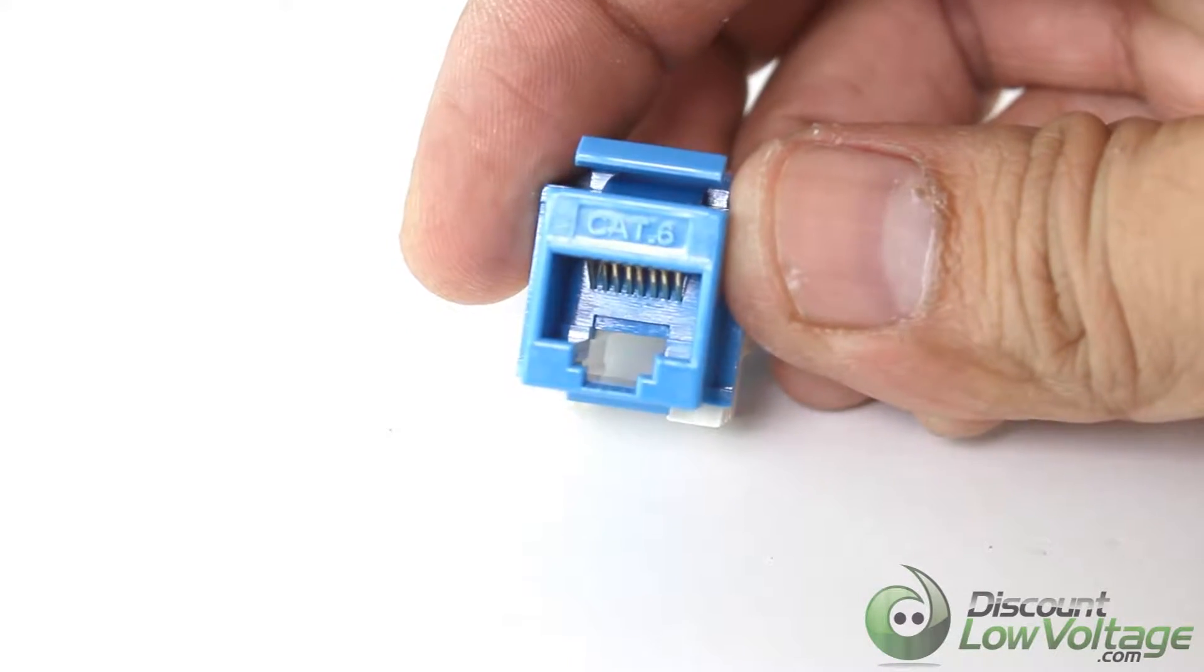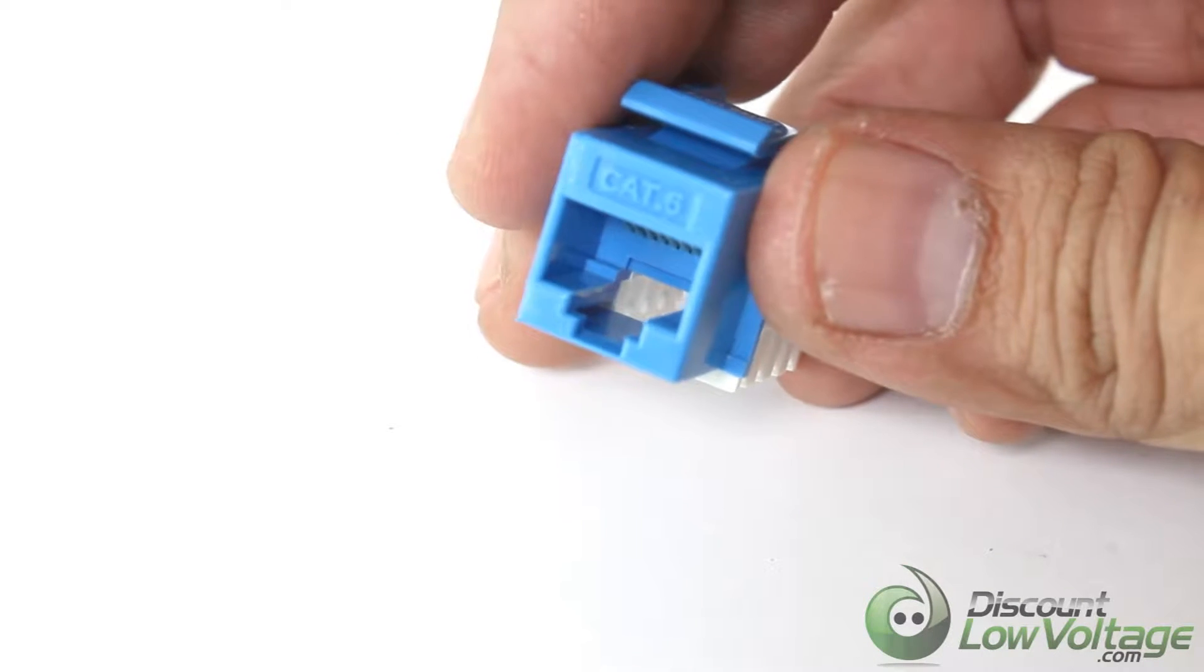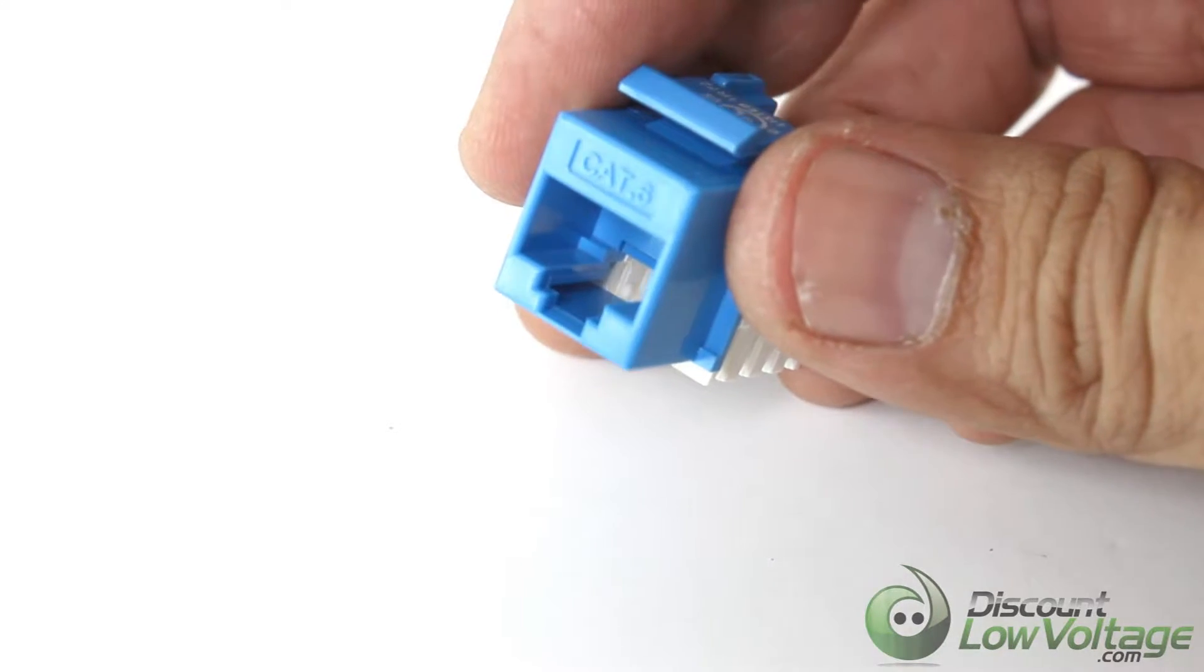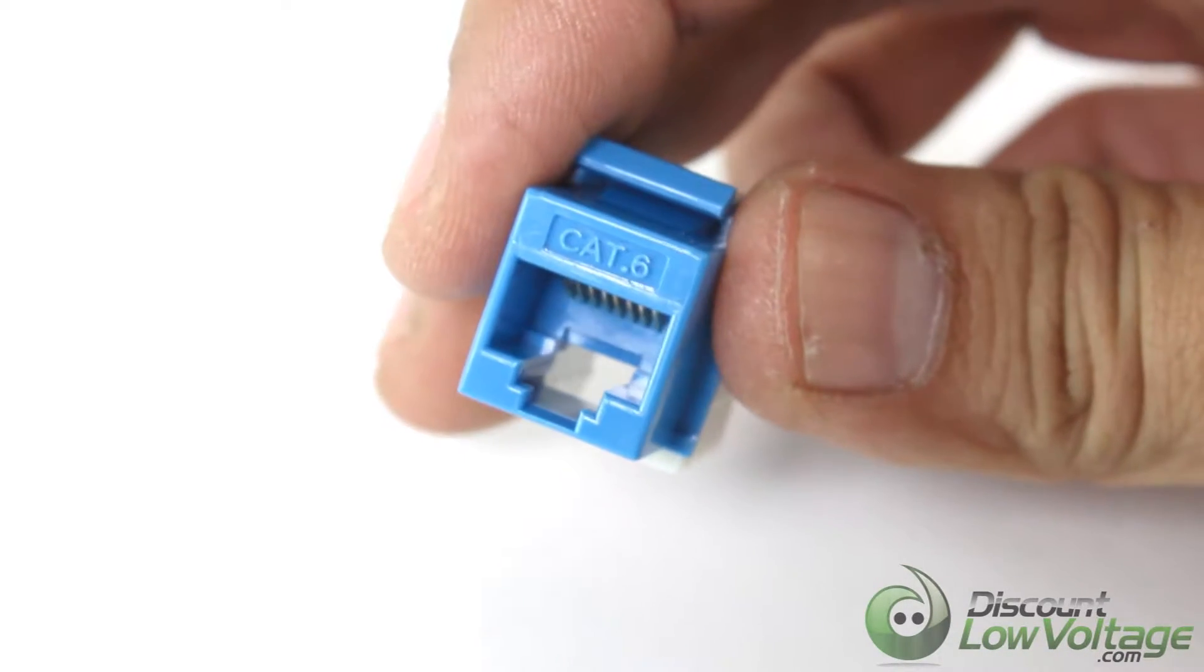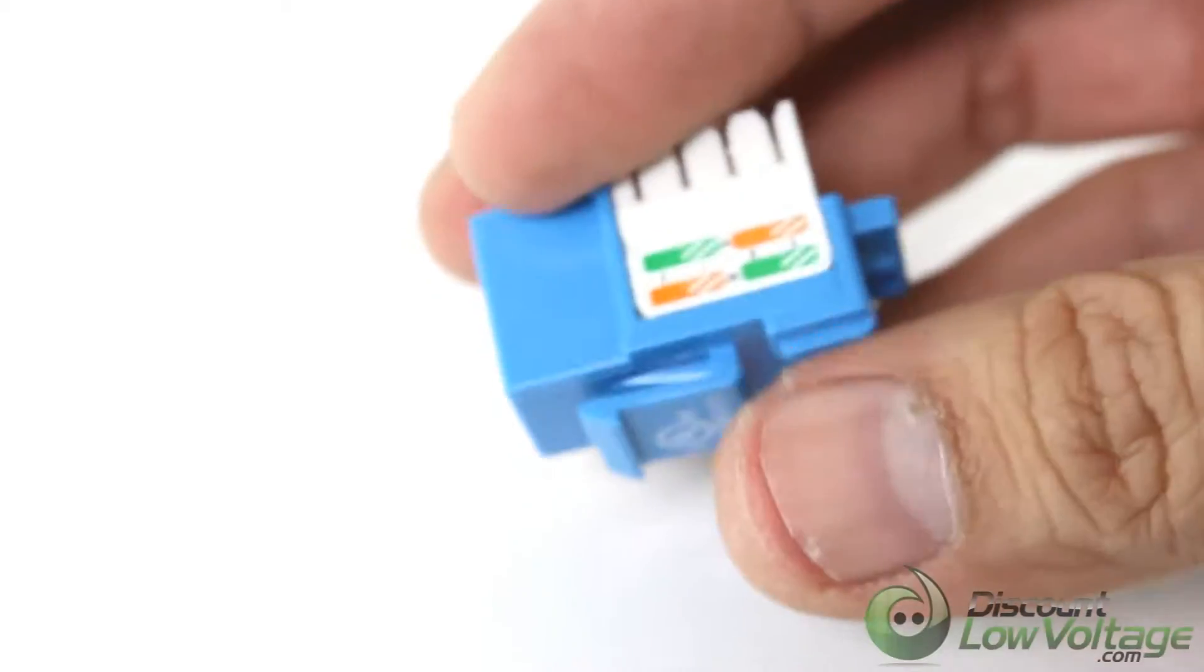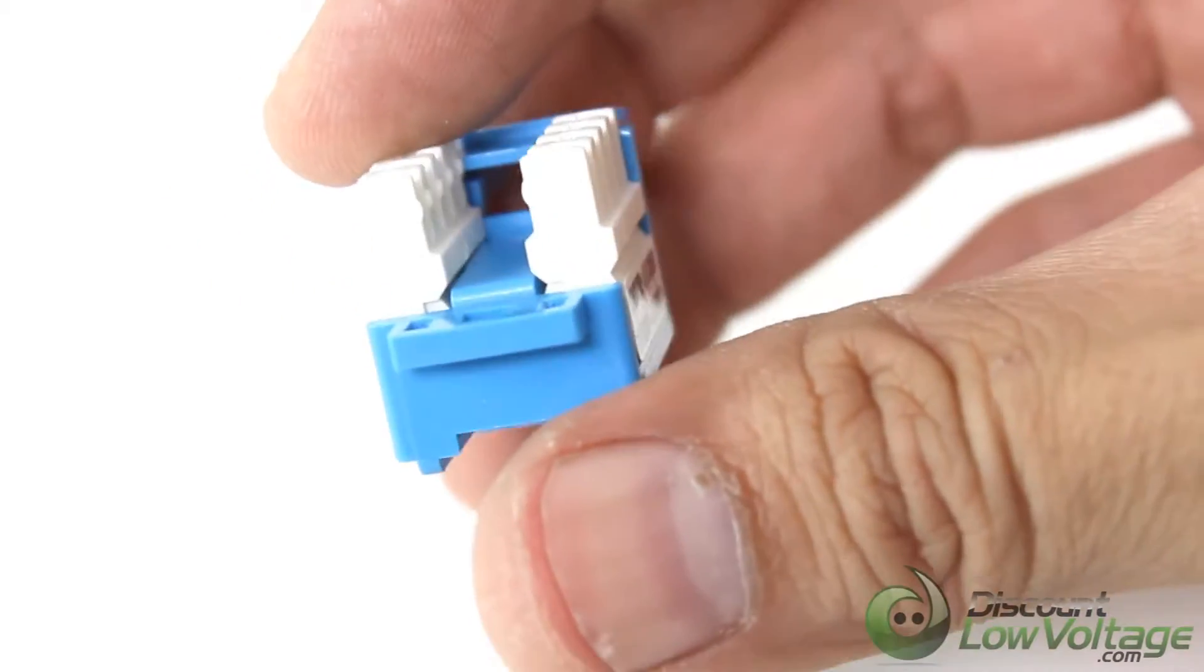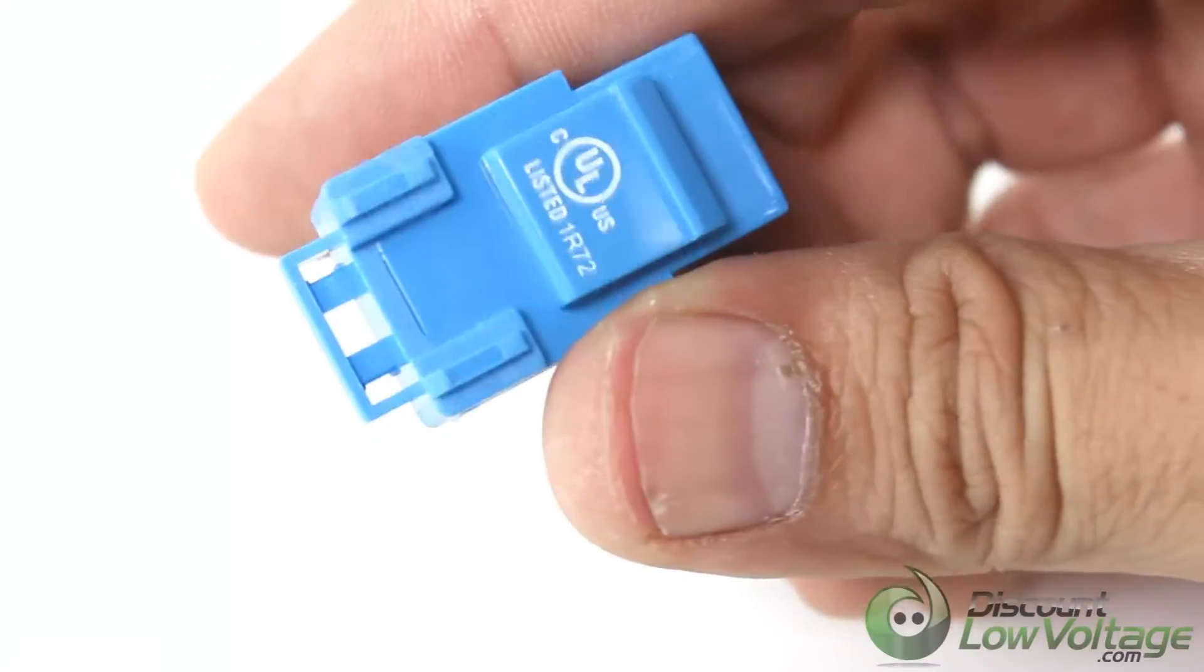These CAT-6 Keystone Jacks from DiscountLowVoltage.com are designed for superior performance that meets or exceeds industry standards Category 6 Class E according to TIA-EIA568B2.1 and ISO 11801 2nd Edition.